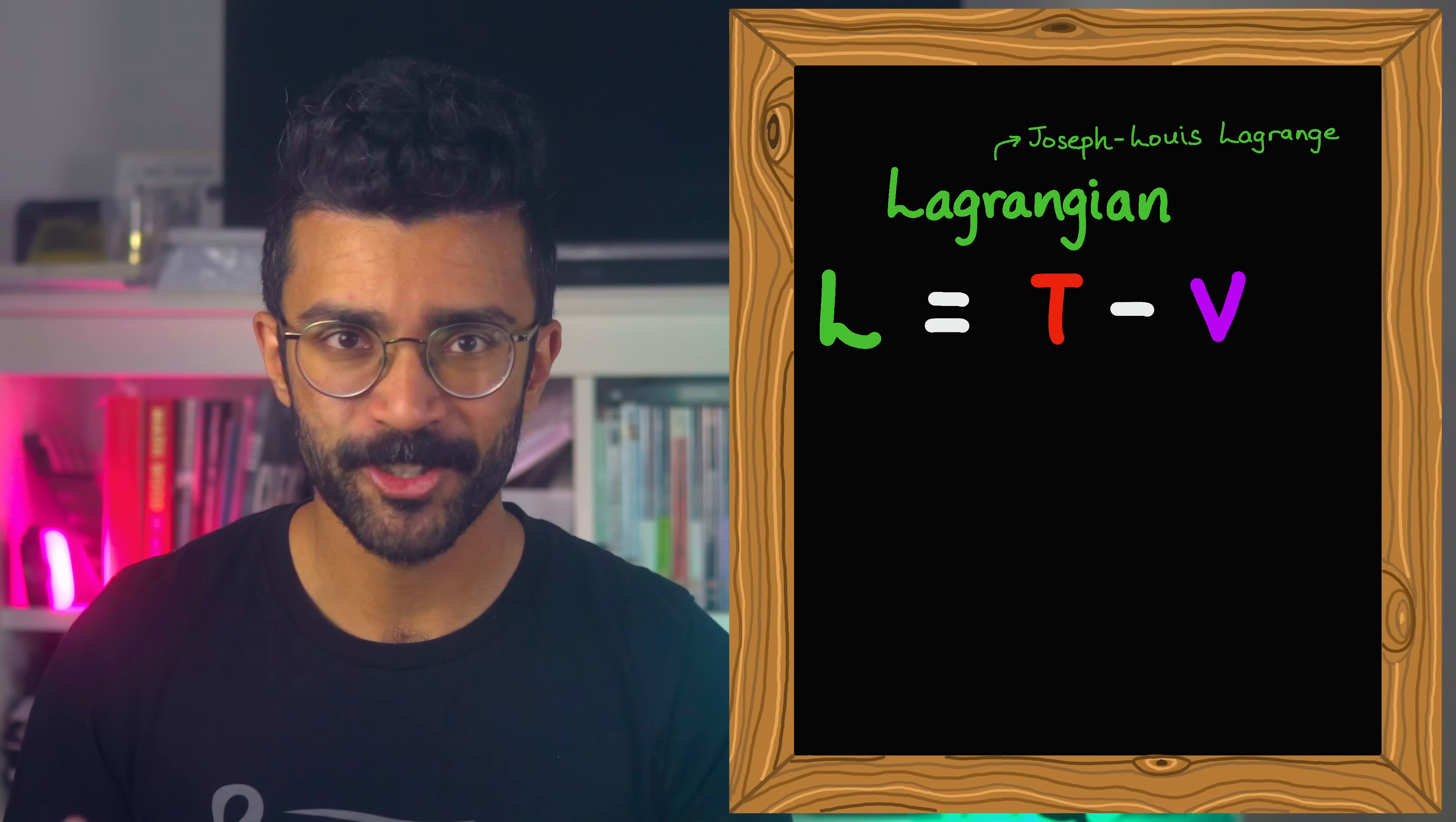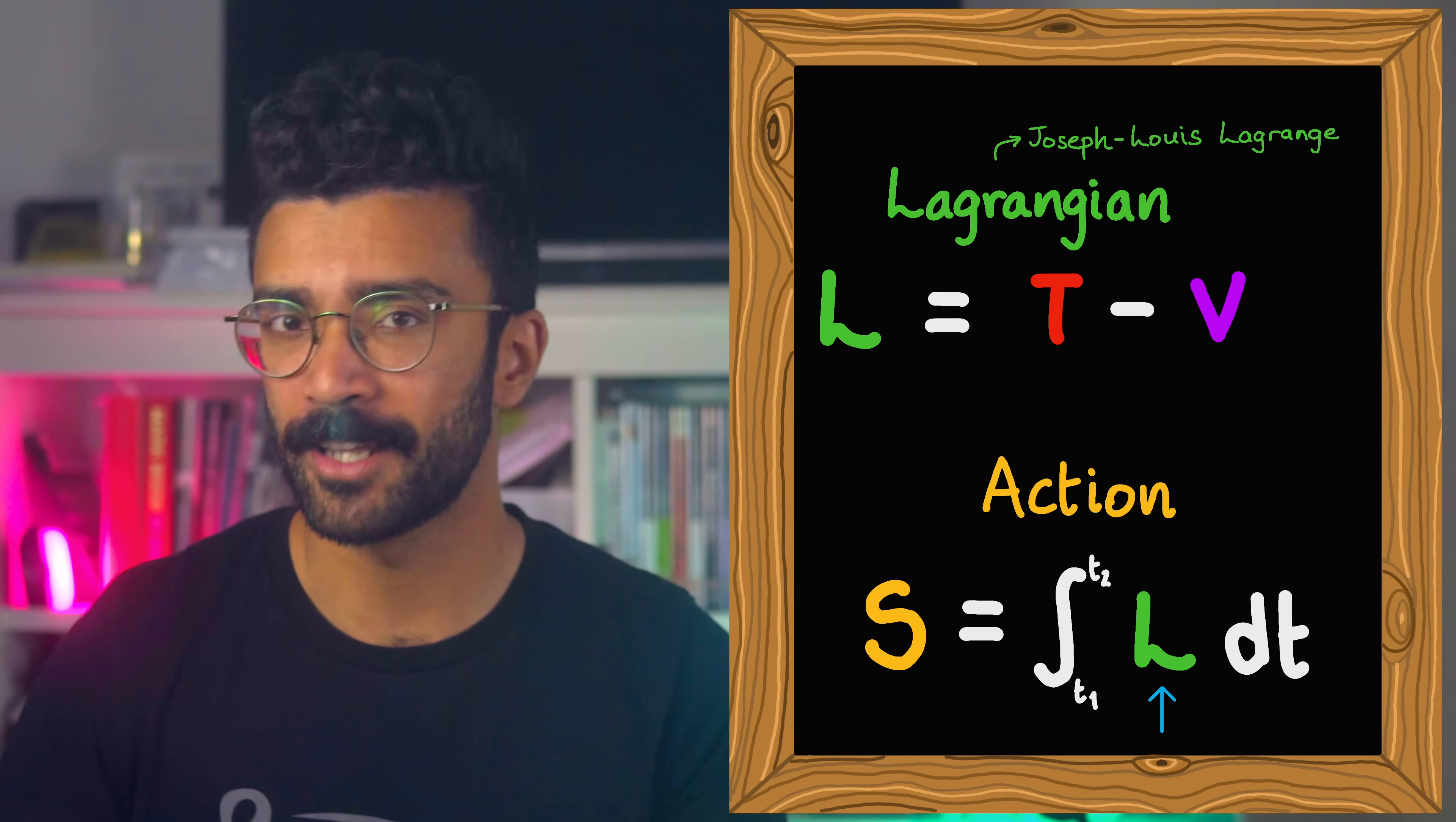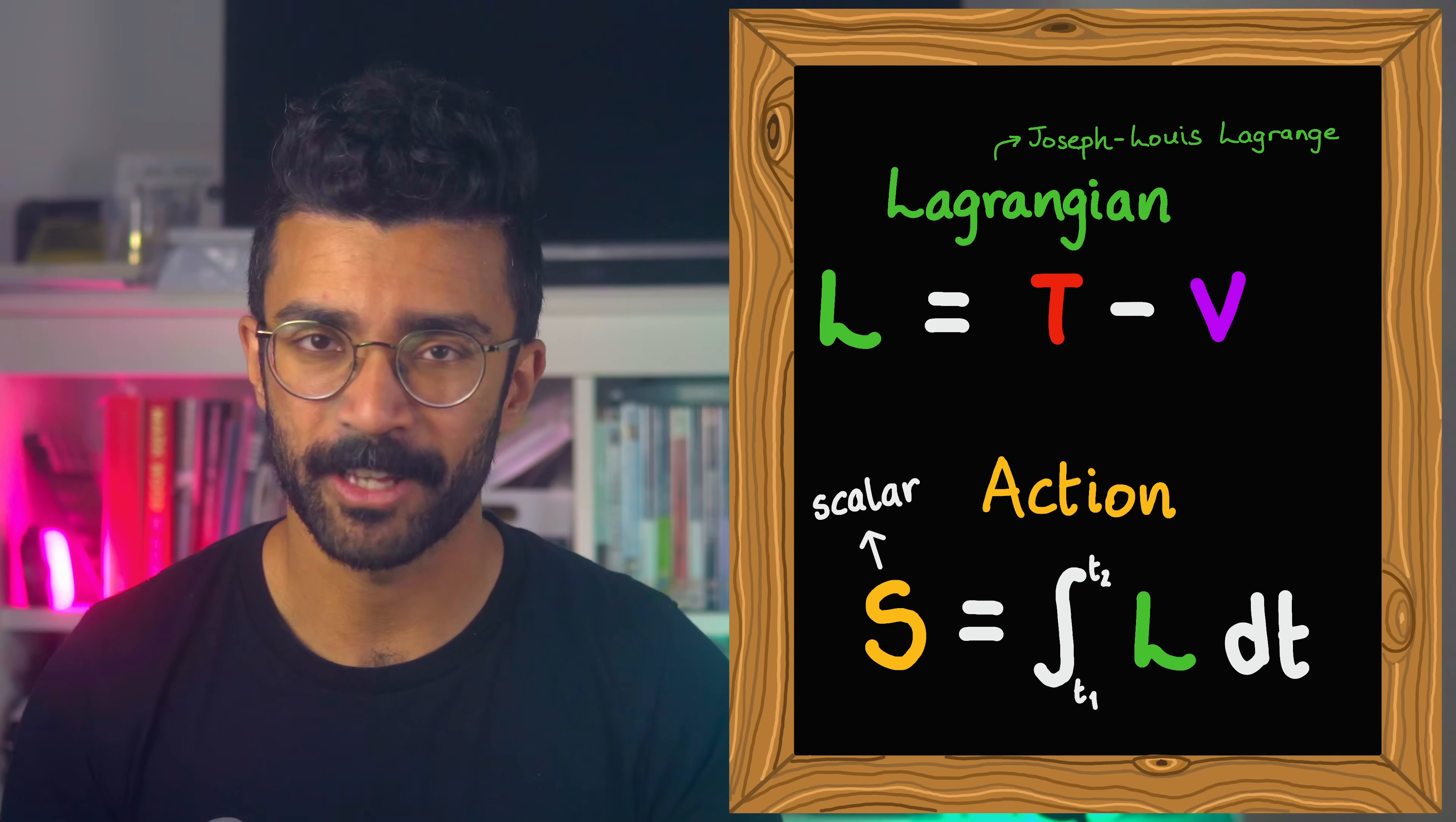But here, the Lagrangian just serves the purpose of defining another quantity, known as the action. The action is defined as this particular integral here. It's essentially measuring how the Lagrangian changes over time, dt, between the time when we start studying the system, t1, and finish studying the system, t2. The equation looks complicated, but the action is just a scalar quantity, meaning it's just a single number once we've calculated the integral.